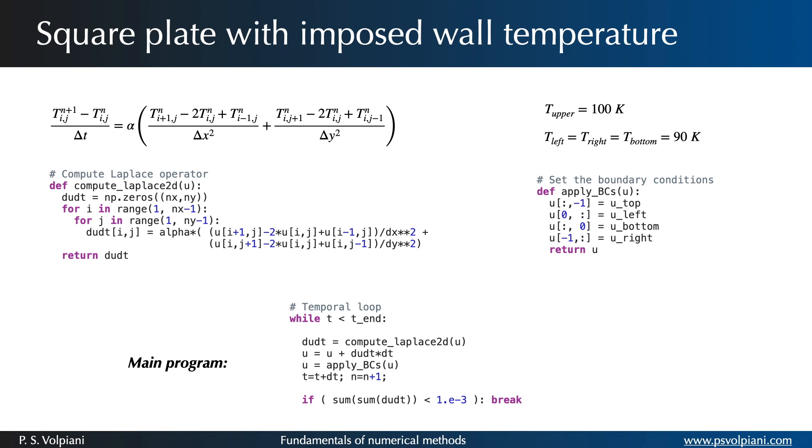Note that we are dealing with a steady state problem. So when the system reaches the equilibrium state, the changes between one iteration and the next is going to be very small. Therefore we can stop the simulation when a criterion is verified.